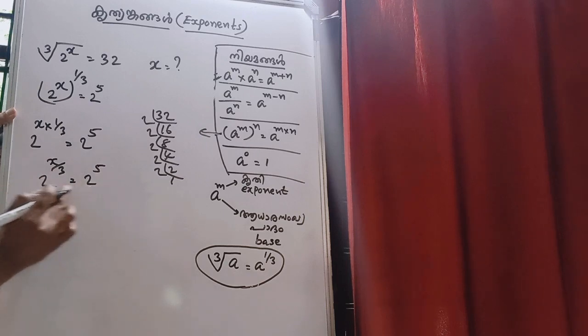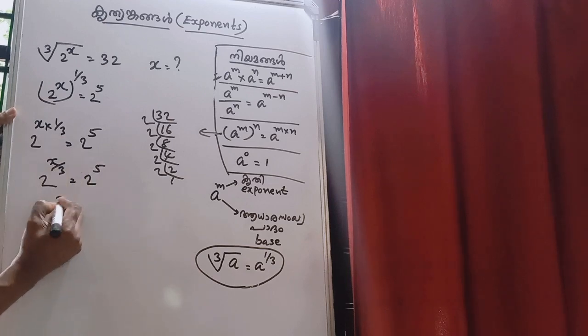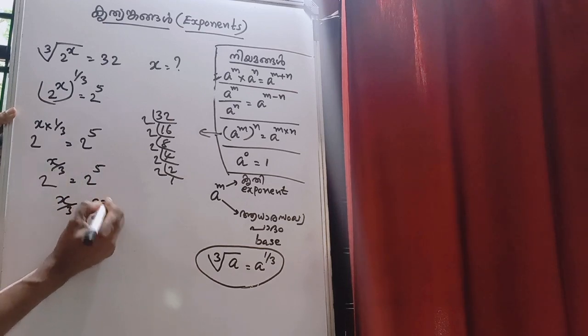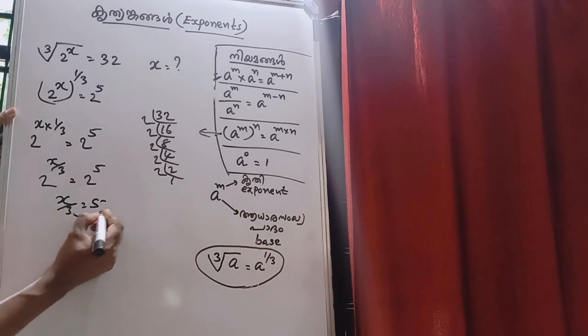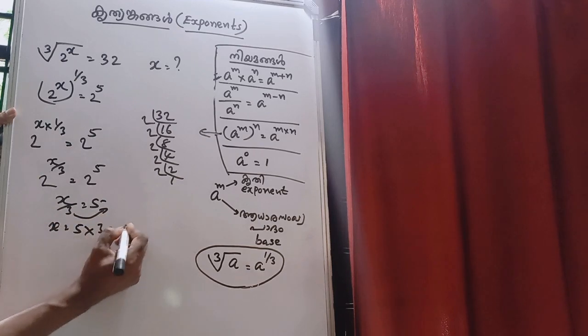The base is correct. The base is correct. If the second word is correct, x by 3 sum 5, x by 3 sum 5, the next is third are 3, and third are 3. Here, x sum 5 into 3 sum 15.